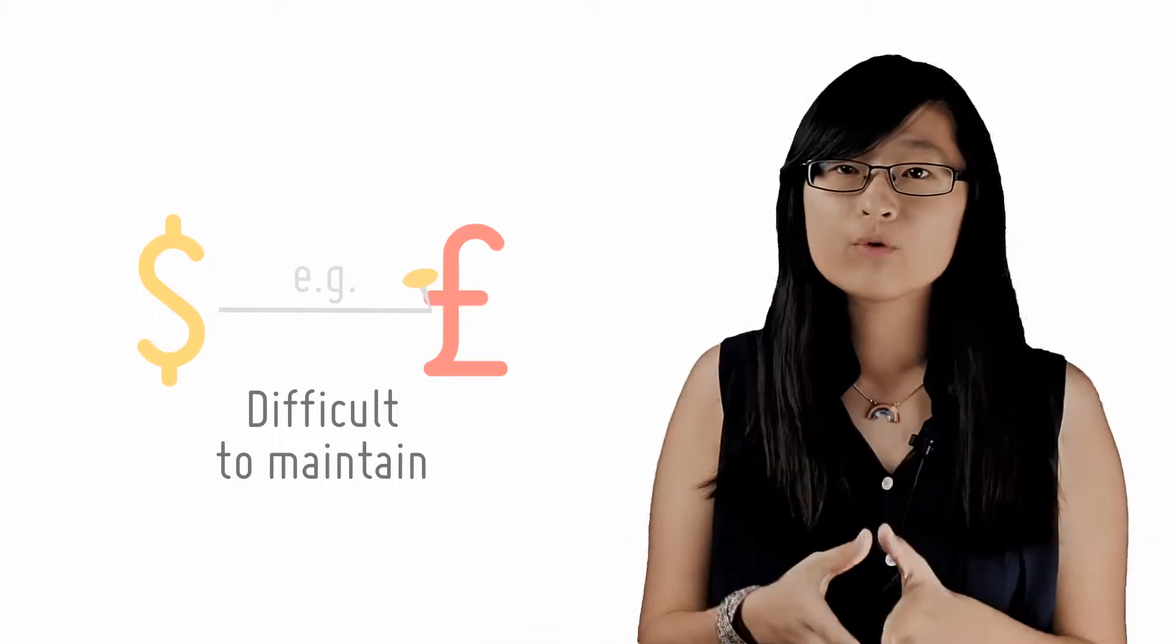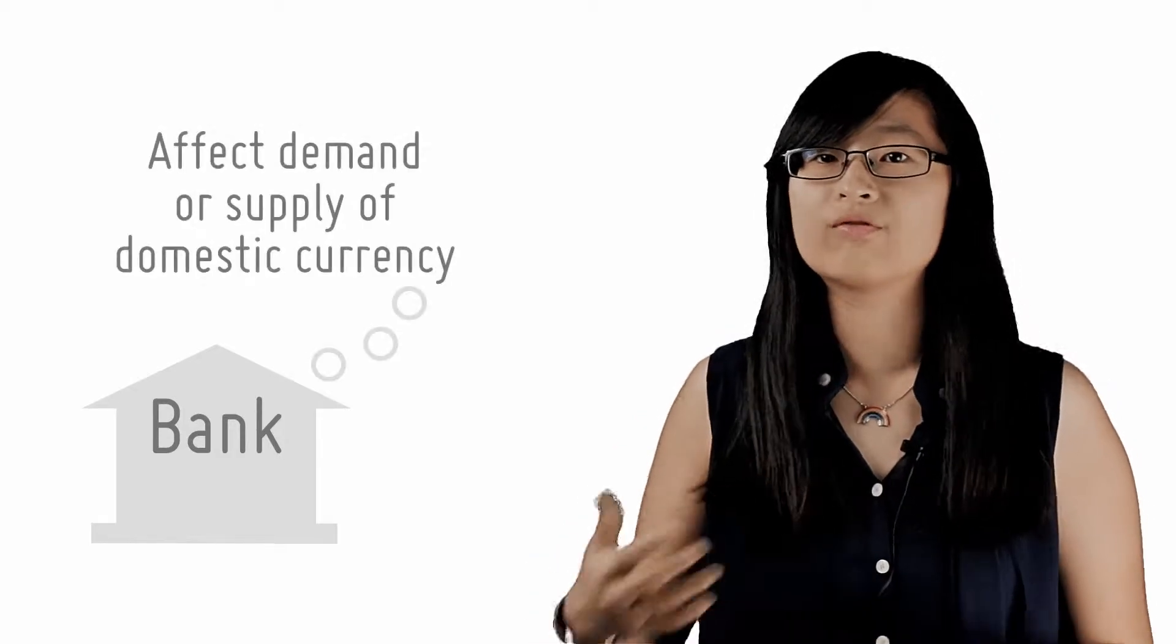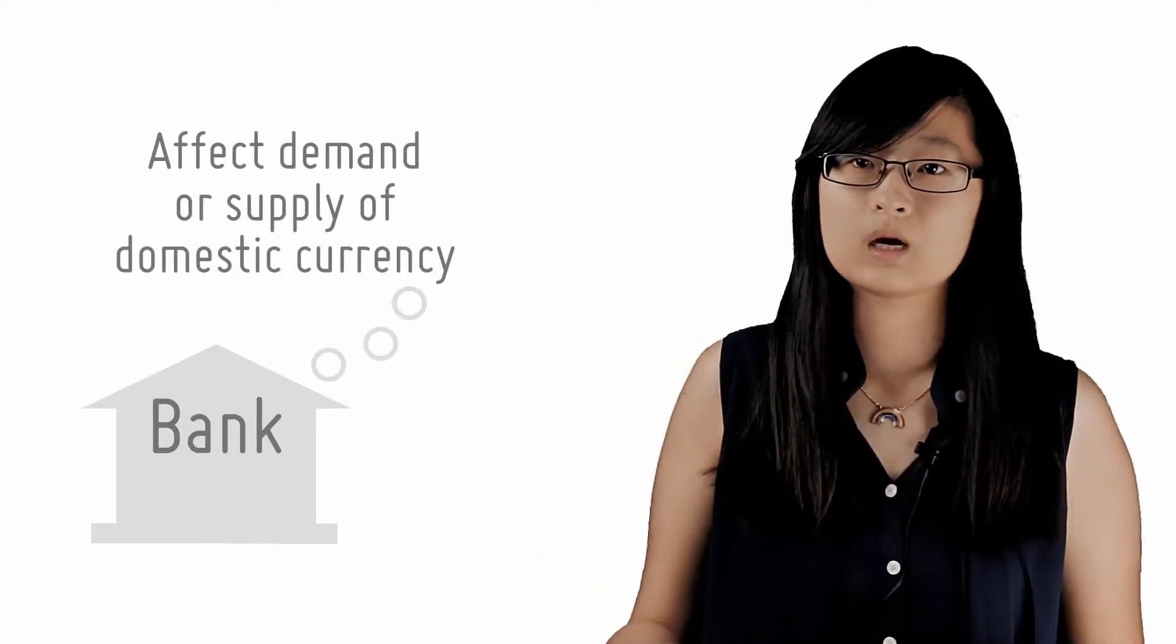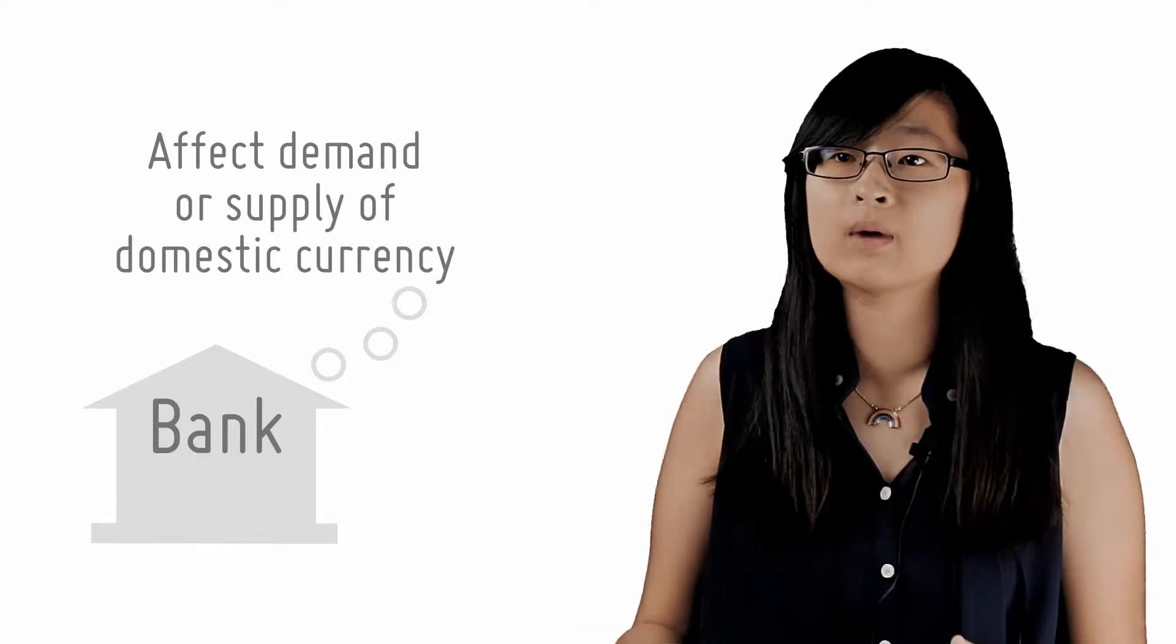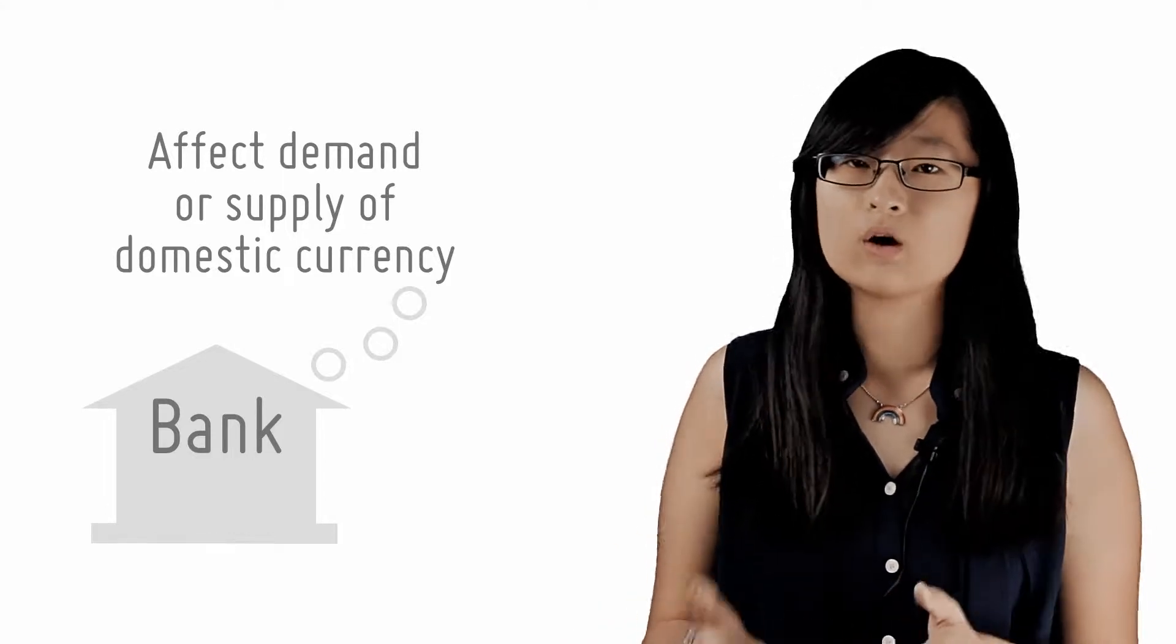In order to influence the price at which one currency trades for another, the central bank has to affect the demand or supply of its domestic currency so as to counteract the free market forces that would otherwise have caused it to change.